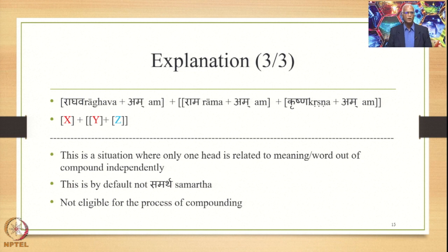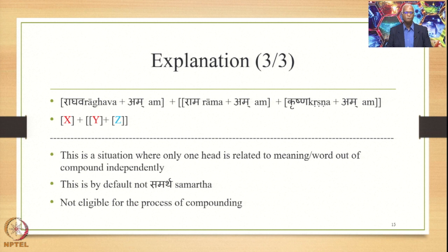So what we have is Raghava plus Am, separate, and Rama plus Am and Krishna plus Am. These are the two words which are compounded first. So we have X plus Y plus Z, and here first Y and Z get compounded. But the point is that Y also has another qualification outside of the compound — that is X. And X is not a qualification of the other head, which is Z. This is a situation where only one head is related to the meaning or word out of compound independently. Therefore this is not considered to be Samartha by default, and therefore this is not eligible for the process of compounding.